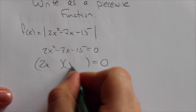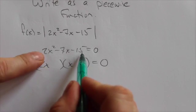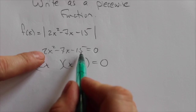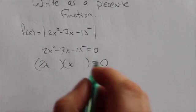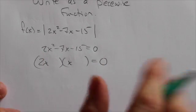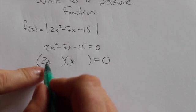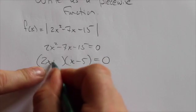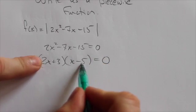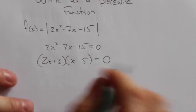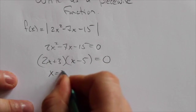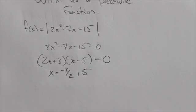So 2x and x - now I'm looking for two numbers that multiply to get the 30 there and add to get the negative 7, but I'm going to just guess and check this. You guys can factor this however you need. If I make this negative 5 and plus 3, that's going to be negative 10 plus 3, which gives me the negative 7. And so x equals negative 3 halves or positive 5.